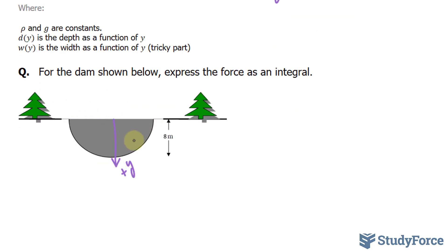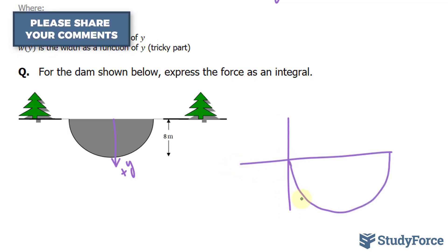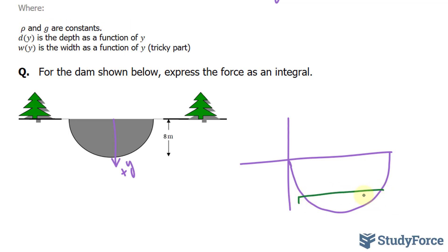We have a semicircle here and I'll redraw it for clarity. If we take mini rectangles all along this shape, we would end up with different widths for every rectangle that we take. So to find the relationship between y and the width, what we can do is create a mini right triangle. We're told that from here to here, which is halfway of the semicircle, is 8 meters.